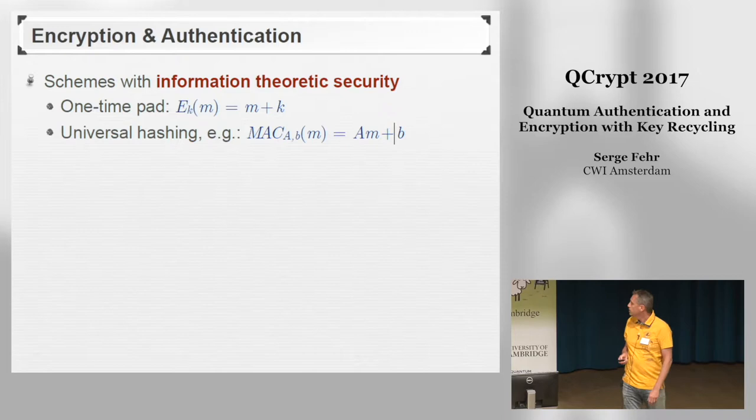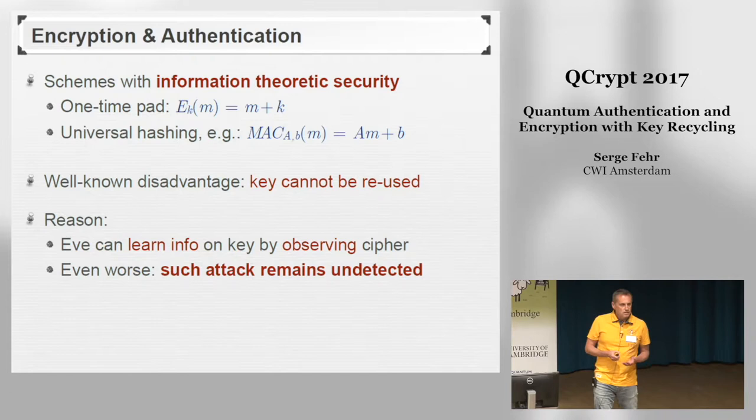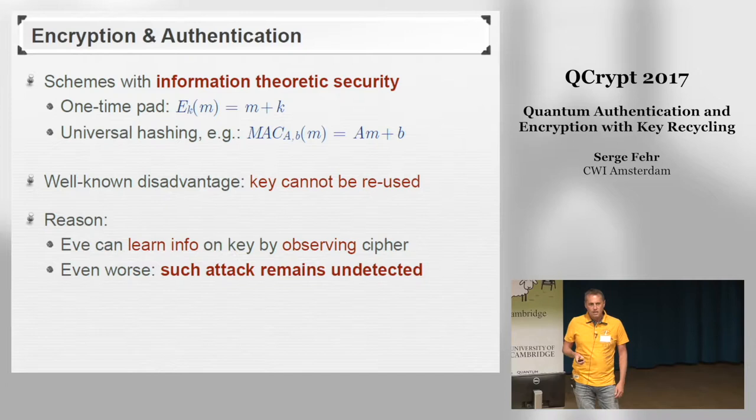The obvious downside with schemes that offer information-theoretic security is that the key cannot be reused. With the one-time pad you can use the key only once; in general, you can only use the key a bounded number of times. An adversary can simply learn information about the key just by observing the communication — the ciphertext in the case of encryption, the tag in the case of authentication.